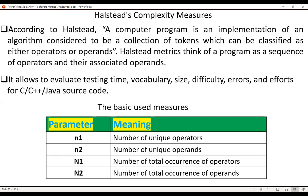The basic measures used in this method are n1, number of unique operators, n2, number of unique operands, capital N1, number of total occurrence of operators, capital N2, number of total occurrence of operands.